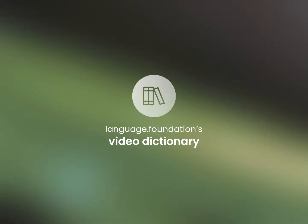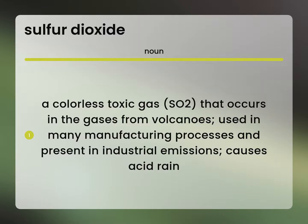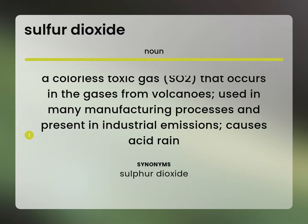Language.Foundation's Video Dictionary, helping you achieve understanding. A colorless toxic gas that occurs in the gases from volcanoes. Used in many manufacturing processes and present in industrial emissions, causes acid rain. Sulfur dioxide.